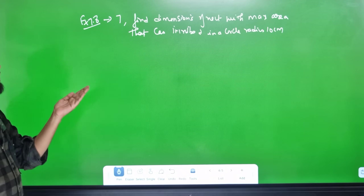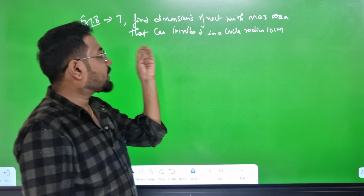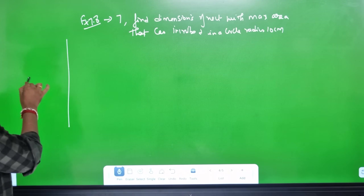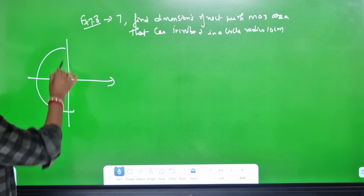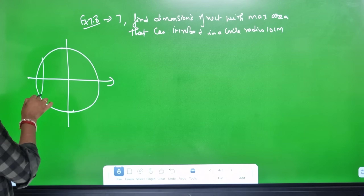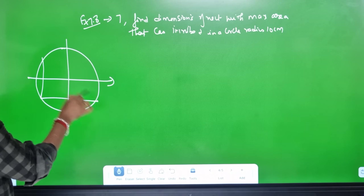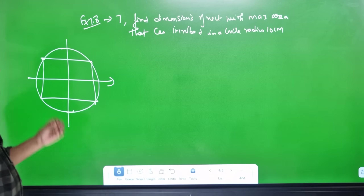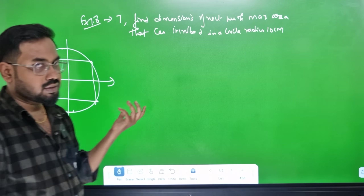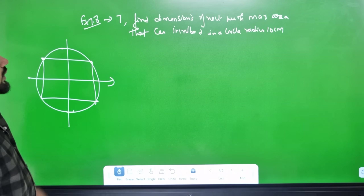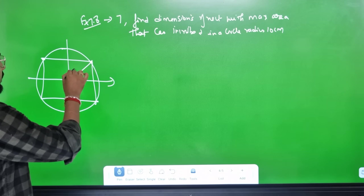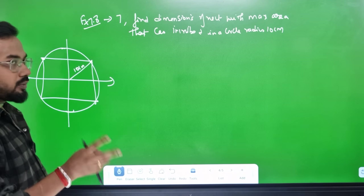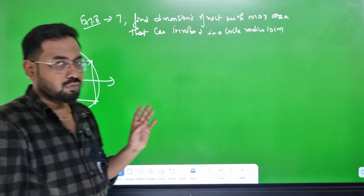Find the dimensions of a rectangle with maximum area that can be inscribed in a circle. We set up x-axis and y-axis with one circle and find the largest inscribed rectangle.